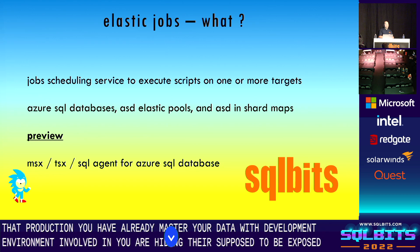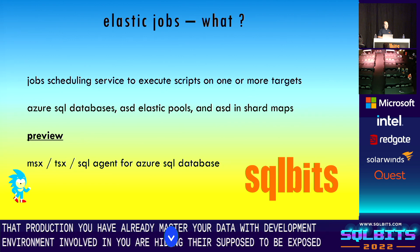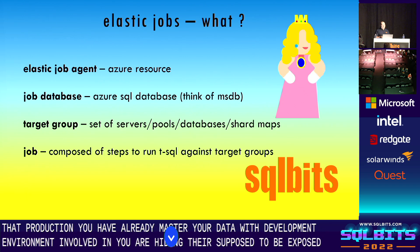Elastic jobs are designed to run against Azure SQL Database — this is not something for on-premises, this is the cloud. There is no SQL Agent service for Azure SQL Database. The service is still in preview; I found posts on Stack Overflow from 2015 mentioning it, so it's a very long preview. If you're familiar with SQL Server on-premises and SQL Server Agent, there's a feature called master and target servers — TSX and MSX — and elastic jobs have some of those features, allowing you to spread jobs to different targets from one source.